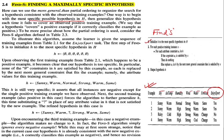For each positive training instance x, for each attribute constraint ai in H: if the constraint ai is satisfied by x, do nothing; otherwise replace ai in H by the next more general constraint satisfied by x. The first step is to initialize H to the most specific hypothesis.